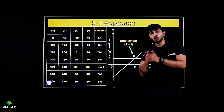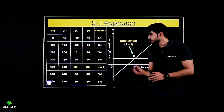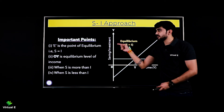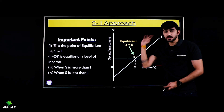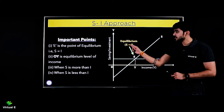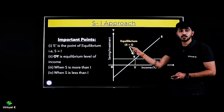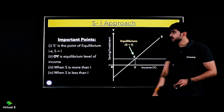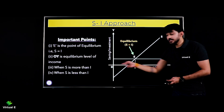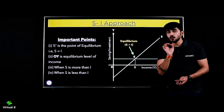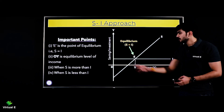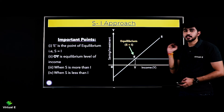Ab dekh lete hain kuch important points. First point: E is the point of equilibrium, that is S is equal to I. This E point is your equilibrium point, yahan pe your S is equal to I, that means your saving is equal to your investment. Second point: OY is the equilibrium level of income - jo OY hai humara, this is your equilibrium level of income. Third point: when S is more than I, that is your phase three.